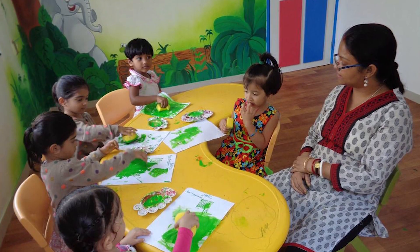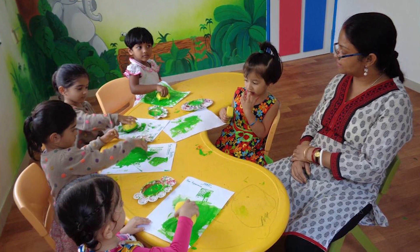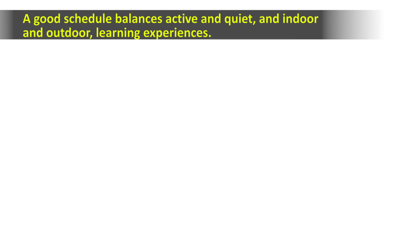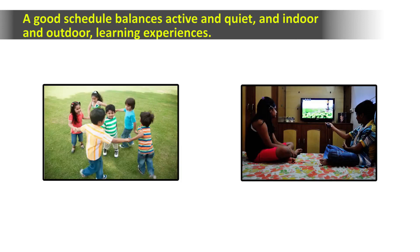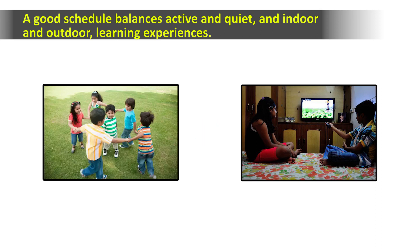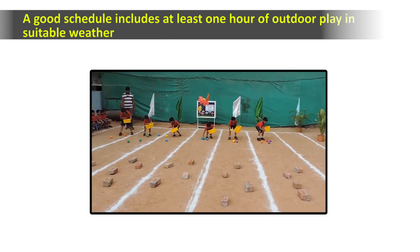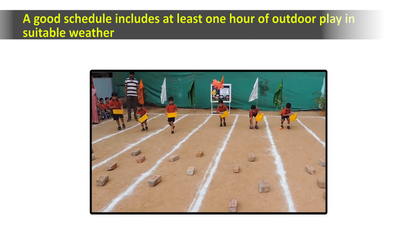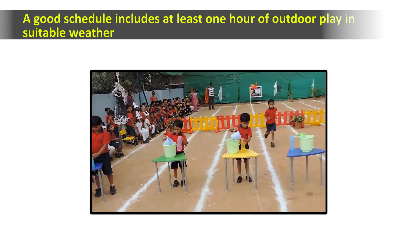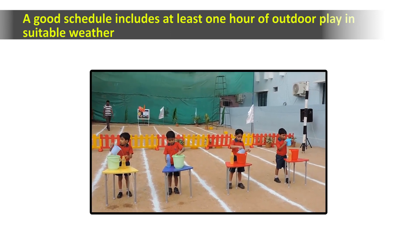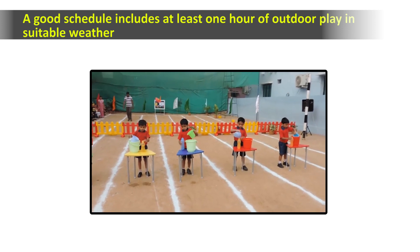A good schedule balances child-initiated activities with adult guidance and support, and also balances active and quiet, indoor and outdoor learning experiences. Alternating active and quiet activities helps children avoid fatigue and boredom and helps them maintain self-control. Children need both indoor and outdoor experiences every day, including at least one hour of outdoor play in suitable weather. Children will experience outdoor play for a portion of every day unless weather conditions are extreme.